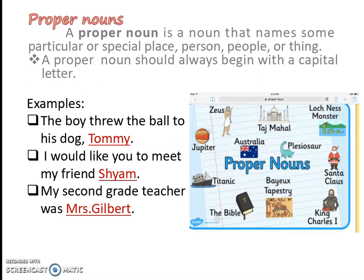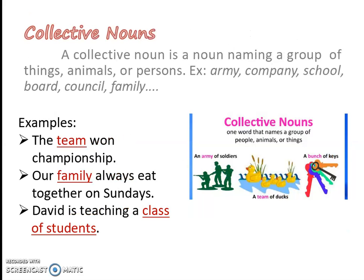Next, proper noun. What is a proper noun? A proper noun always begins with a capital letter. A proper noun is a noun that names some particular or special place, person, people, or thing. It is telling about particular things or place or person. Here are some examples: 'The boy threw the ball to his dog, Tommy.' 'I would like you to meet my friend, Shan.' 'My second grade teacher was Mrs. Gilbert.' These all are proper nouns.